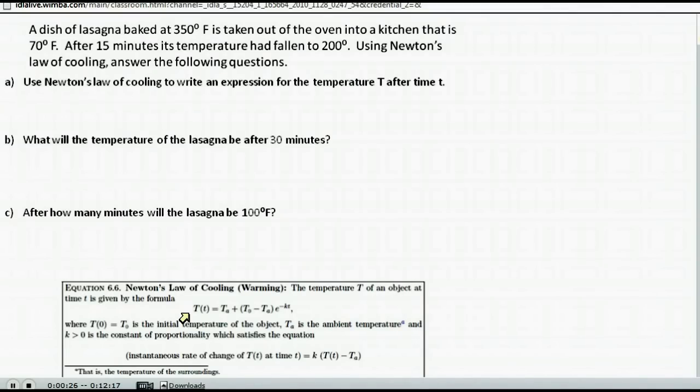T(t), or the temperature of something after t minutes, is equal to T_A, which is the temperature of the environment it's brought into, plus T_0, which is the original temperature of the food, minus T_A, which again is the temperature of the environment it is brought into, times e to the negative K, that's our rate of cooling, times the amount of time that has passed.